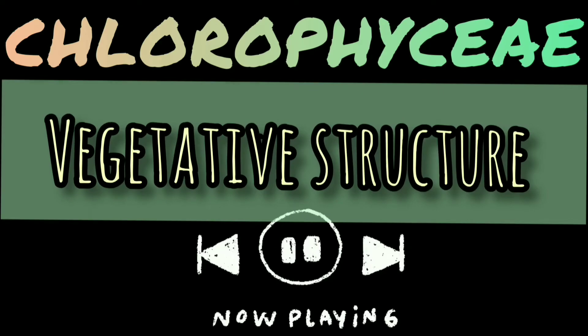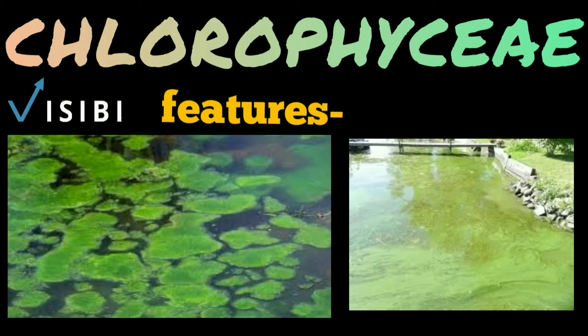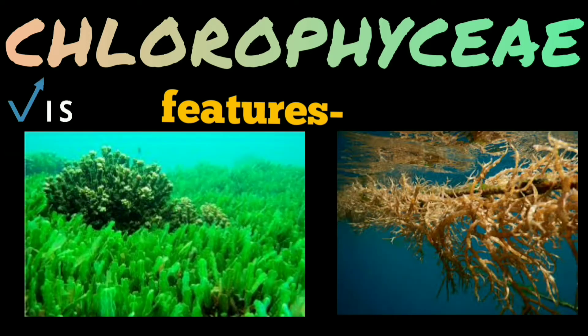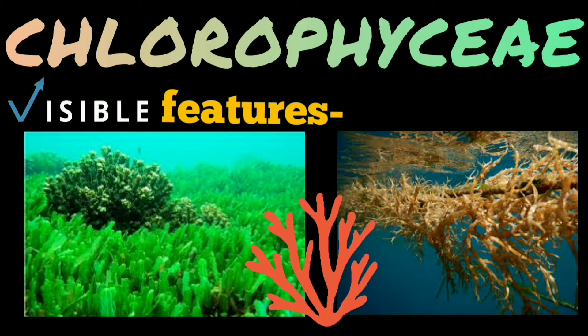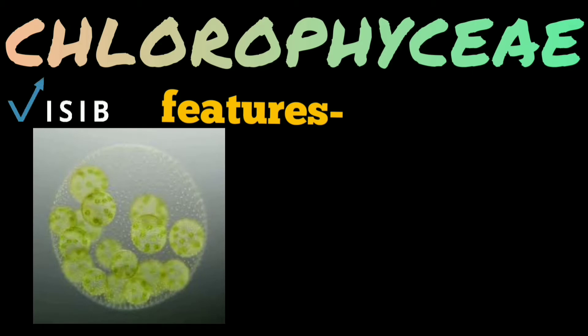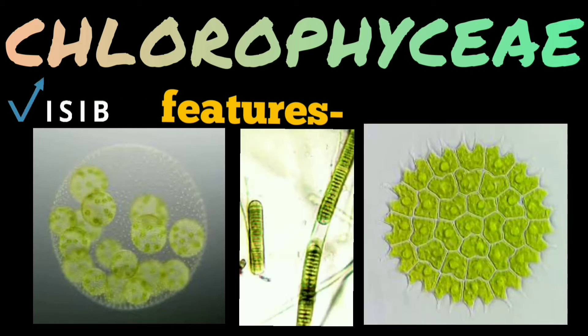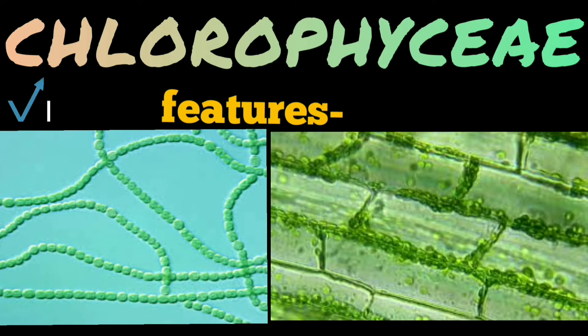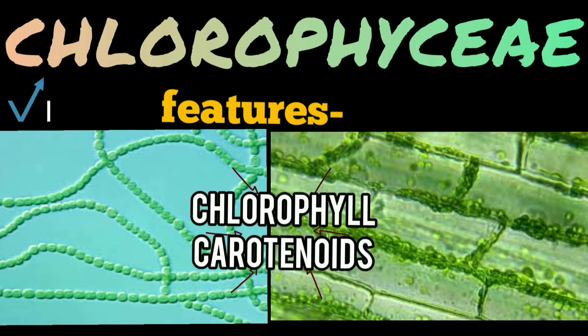First, let's introduce ourselves to some common visible features. The class Chlorophyceae includes most freshwater green algae, with a few marine algae as well. An algal plant body contains both simple and complex types; the vegetative body may be unicellular, colonial, or multicellular. All members are associated with chlorophyll and carotenoid pigments, and hence a grass-green color is produced.